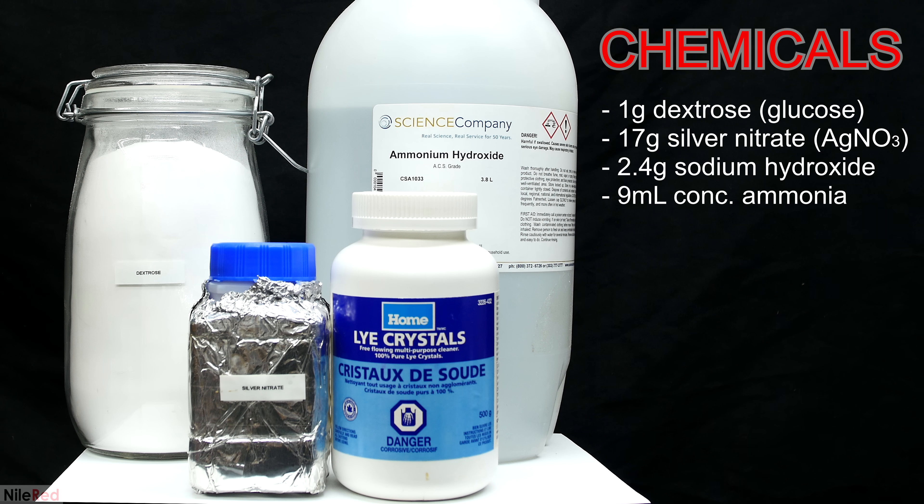To make the Tollens reagent, I need silver nitrate, sodium hydroxide, and ammonium hydroxide, which is also known as aqueous ammonia. The sugar on the left is dextrose, and it's used in the silver mirror demonstration, but it's not used for the actual Tollens reagent.